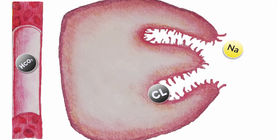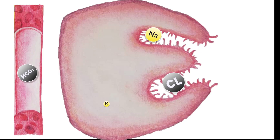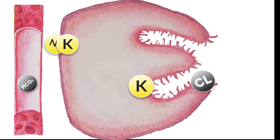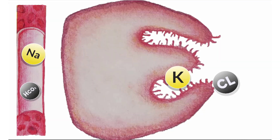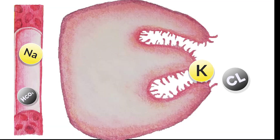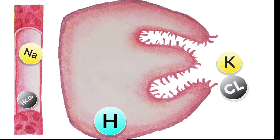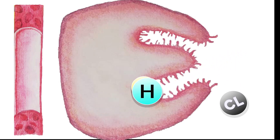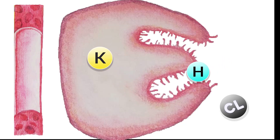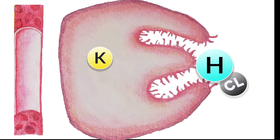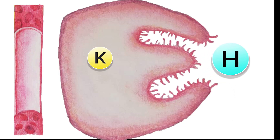Meanwhile, sodium is pumped into the cell and from the cell into the blood in exchange for potassium. Chloride being pumped into the luminal site creates a negative charge that attracts potassium through the canalicular system into the luminal site. That potassium then re-enters the cell in exchange for hydrogen, and we now have our HCl in the luminal site.